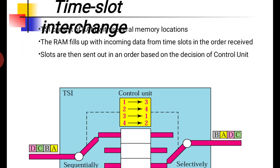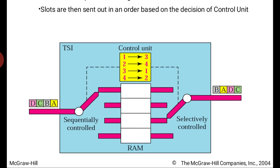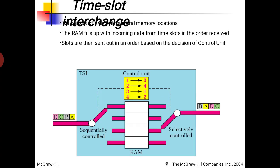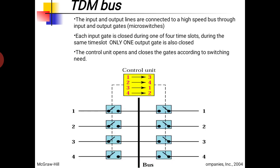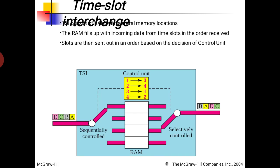In TSI, the RAM fills up with incoming data from the time slots in the order received. Slots are then sent out in a different order based on the decision of the control unit. This allows the switching of data between different time slots.